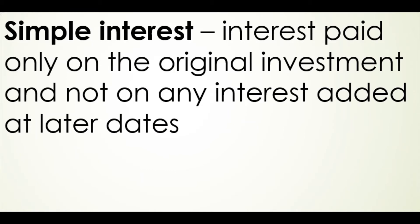There are two types of interest that we need to talk about. First is simple interest. Simple interest is interest that is paid only on the original investment, and not on any interest added at later dates. So, for example, if you invested $1,000 at a 5% annual interest rate, then at the end of a year, you'd be paid $50. That's 5% of $1,000. Then, next year, you'd also be paid $50, because you're only going to be paid interest on that original $1,000 that you invested.